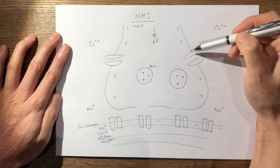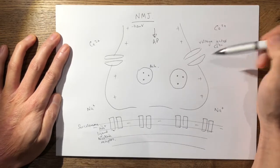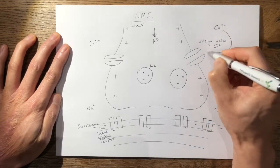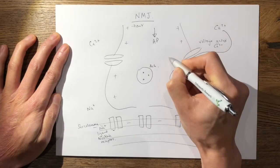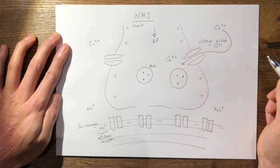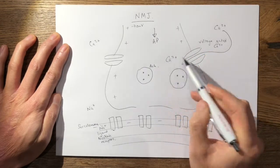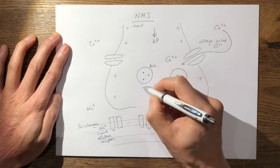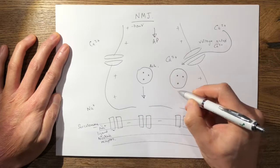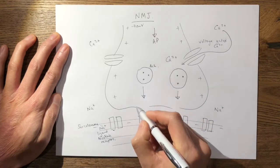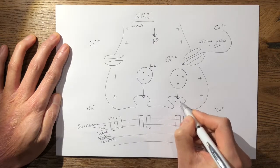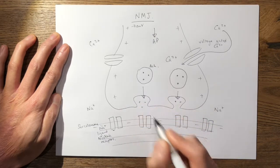As the action potential reaches the voltage-gated calcium channels these open and you get an influx of calcium into the motor end bulb. This higher concentration of calcium affects the vesicles and it causes the vesicles to migrate to the pre-synaptic membrane and allows them to fuse onto the membrane, releasing these vesicles.